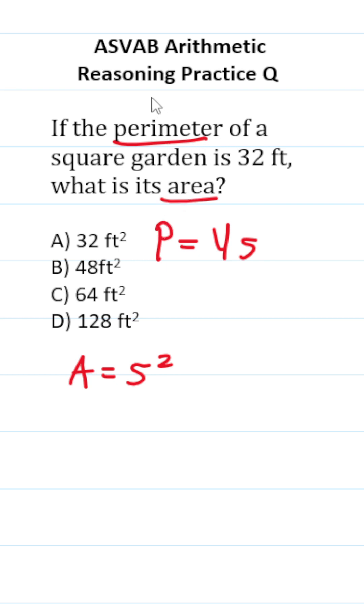All right, so what else are we given? We're told that the perimeter is 32 feet. So in place of P here, let's go ahead and plug in 32. This becomes 32 equals 4S.